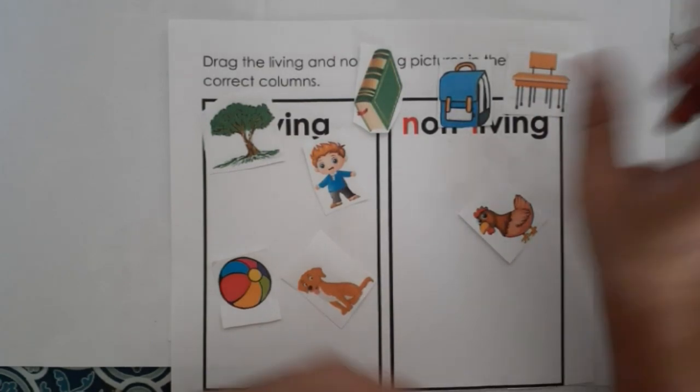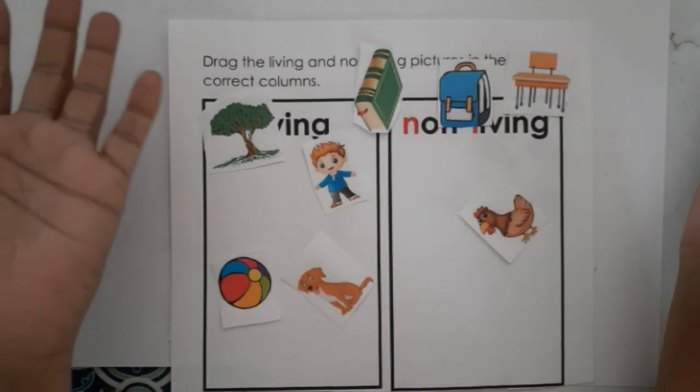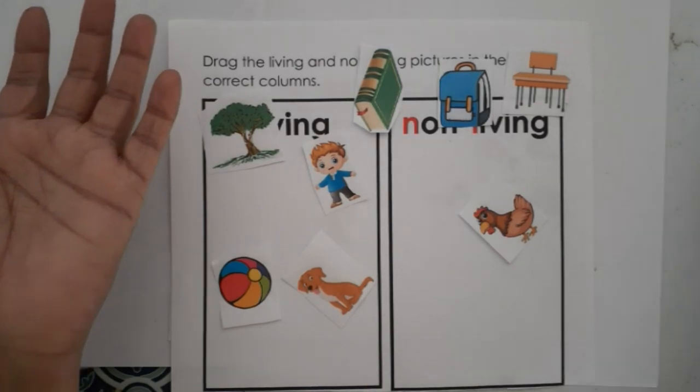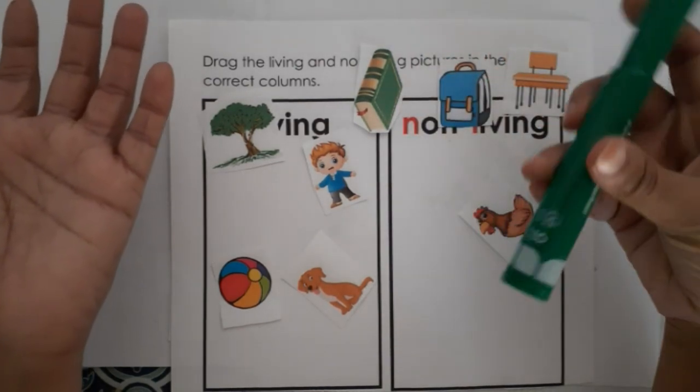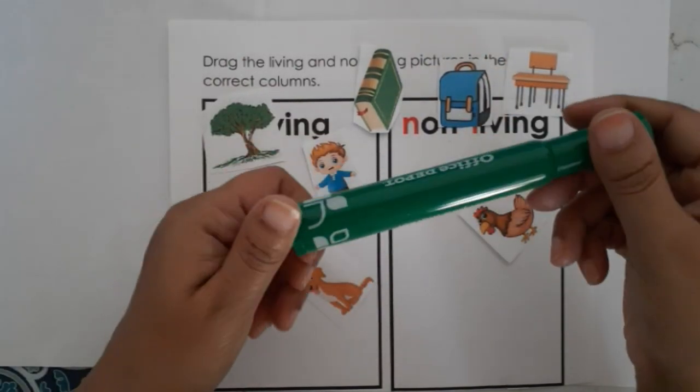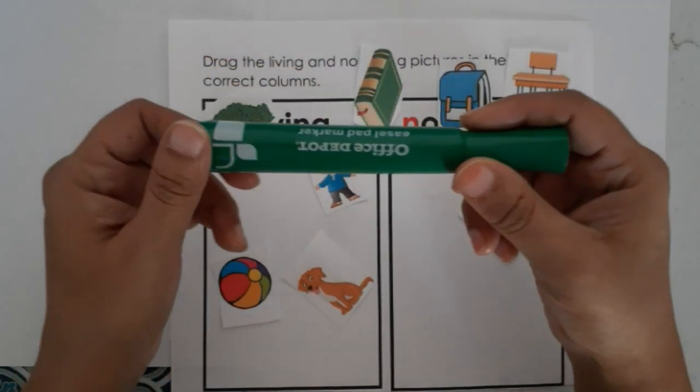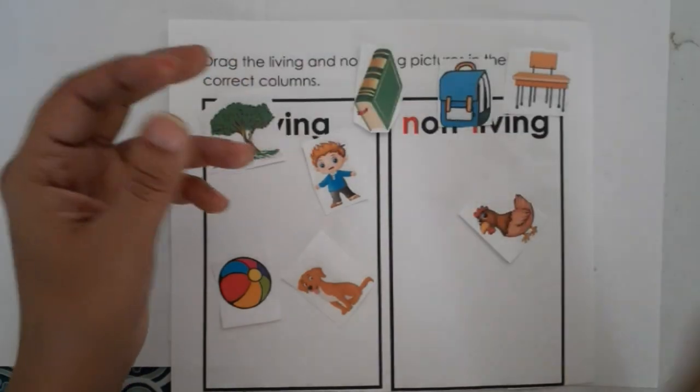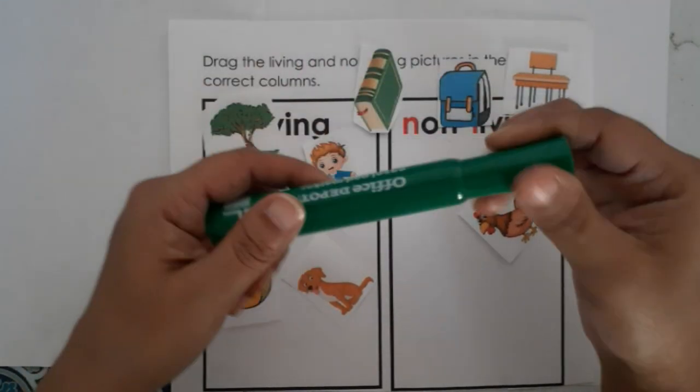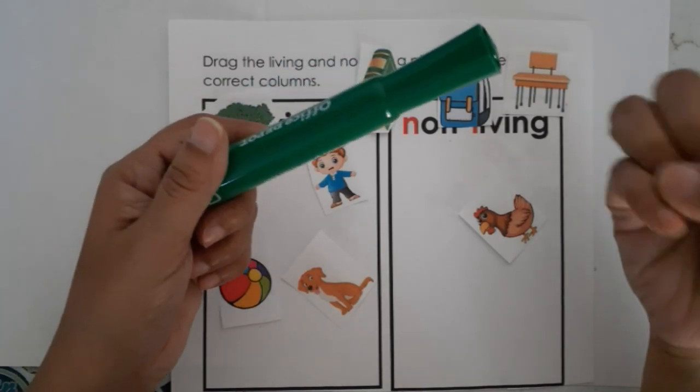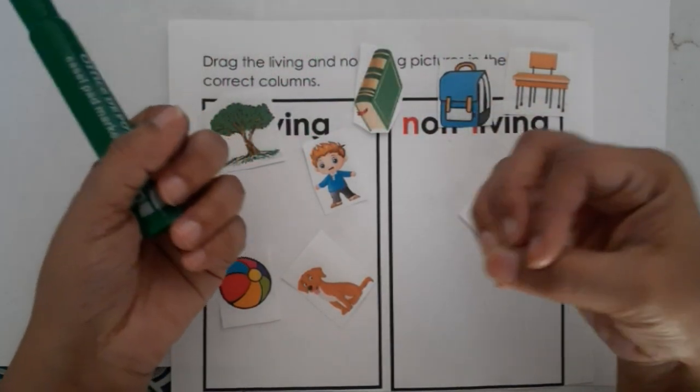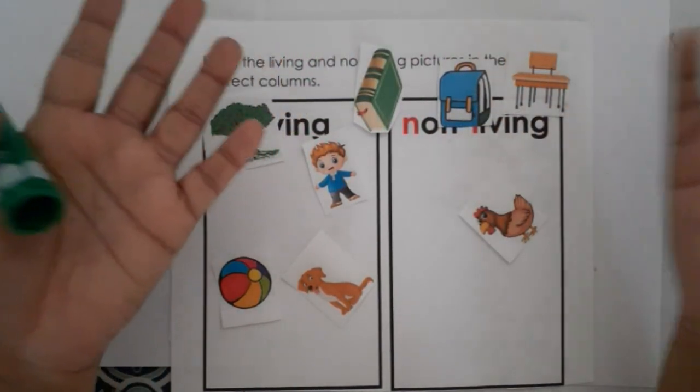These activities are perfect for preschoolers and kindergarteners. You can use simple materials like pictures and worksheets. The activities involve sorting and identifying living and non-living things, which is great for toddlers and preschoolers.